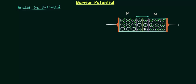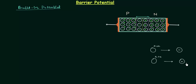What is diffusion? Diffusion is the process in which free charge carriers or mobile charge carriers recombine with each other. For example, if we have an immobile ion with a hole, and if this hole combines with an electron, then we have an immobile ion with a negative charge.